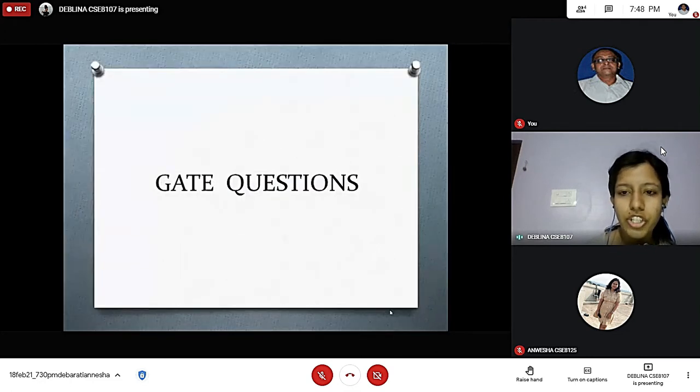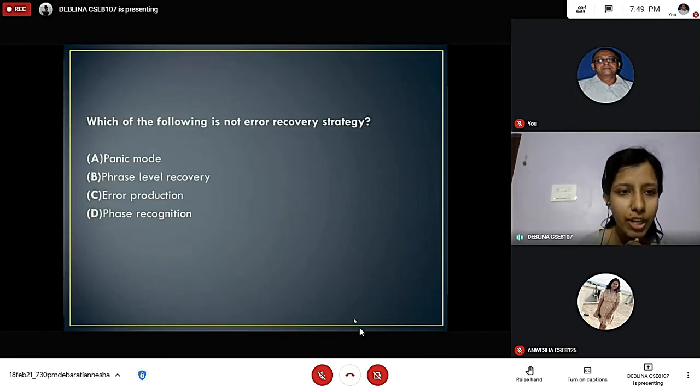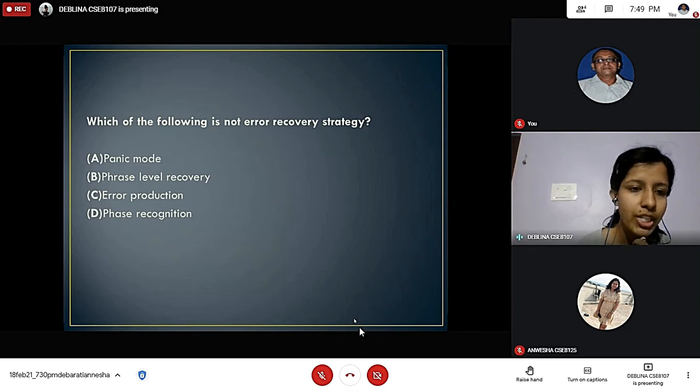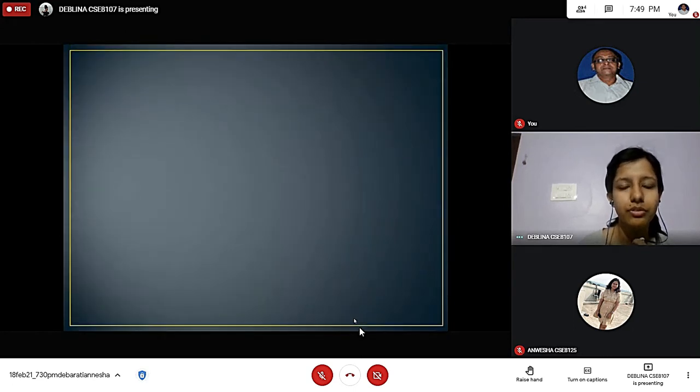Next we have the gate questions. The first question is which of the following is not an error recovery strategy? Option A: Panic mode. Option B: Phrase level recovery. Option C: Error production. Option D: Phrase recognition. The answer is Option D, phrase recognition.